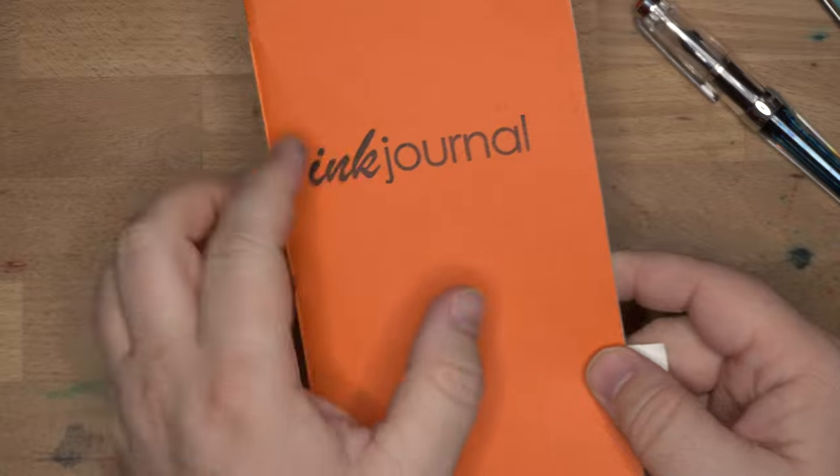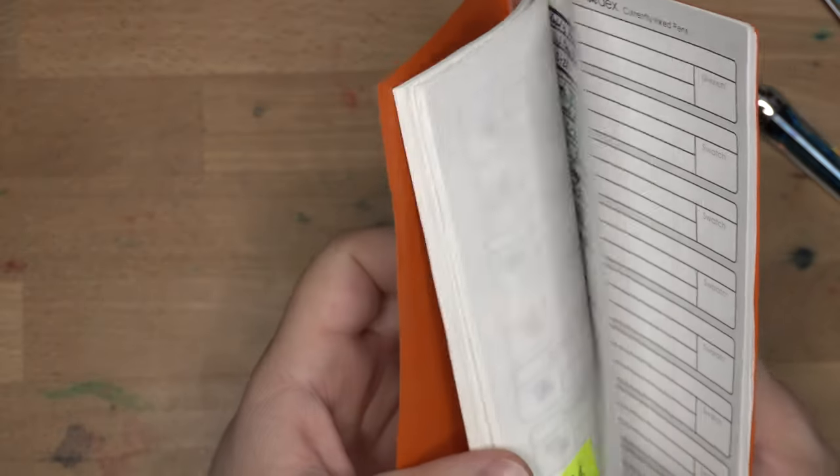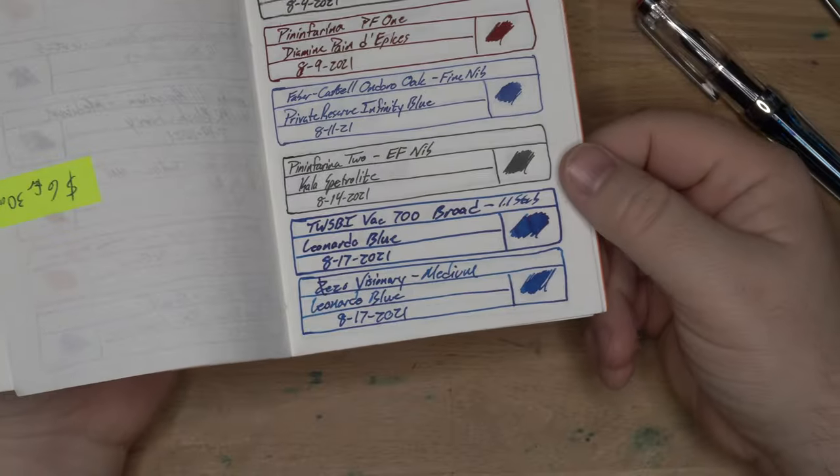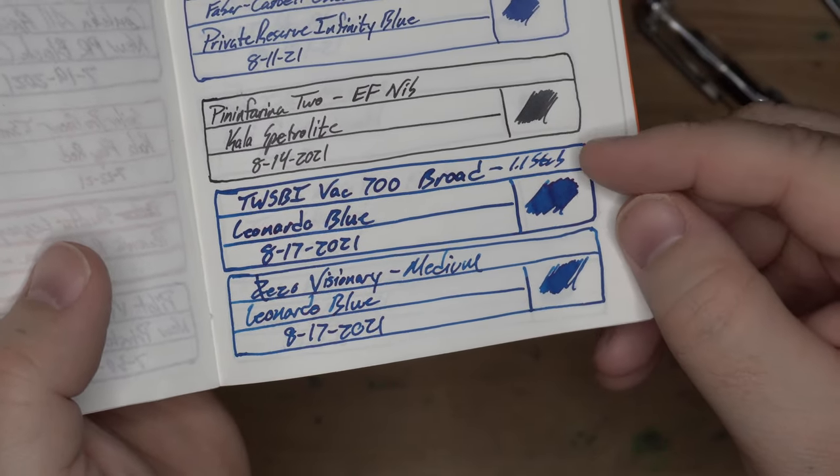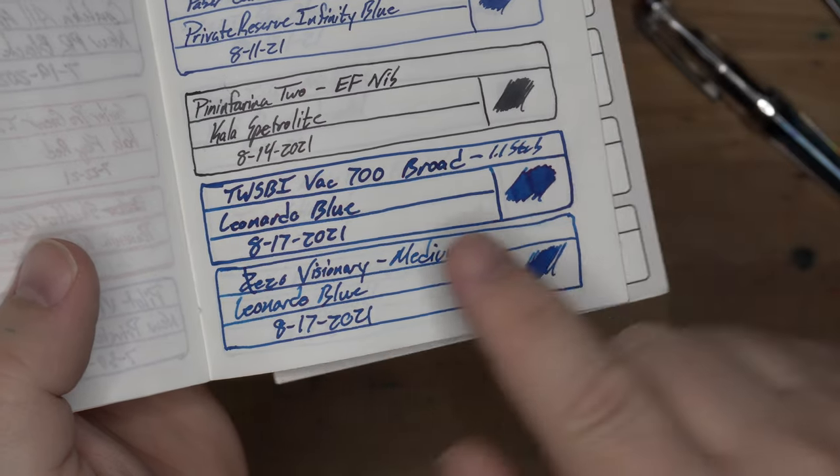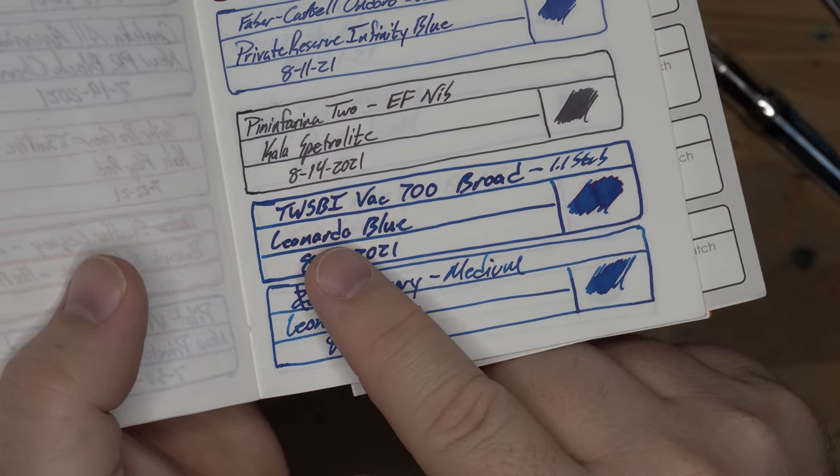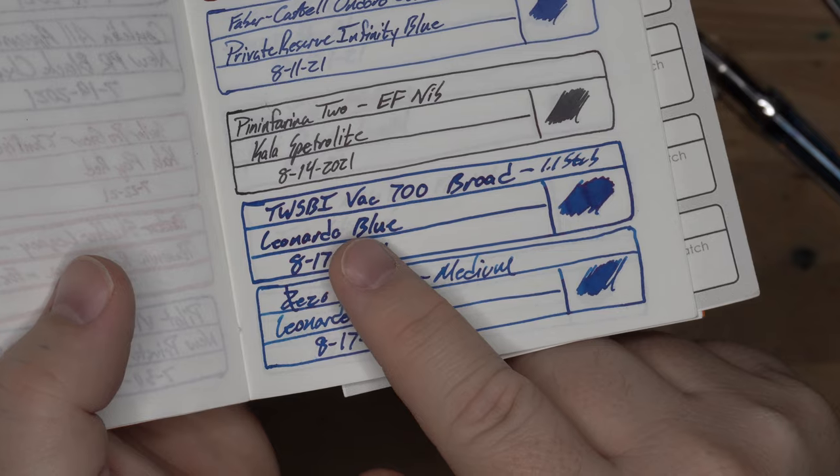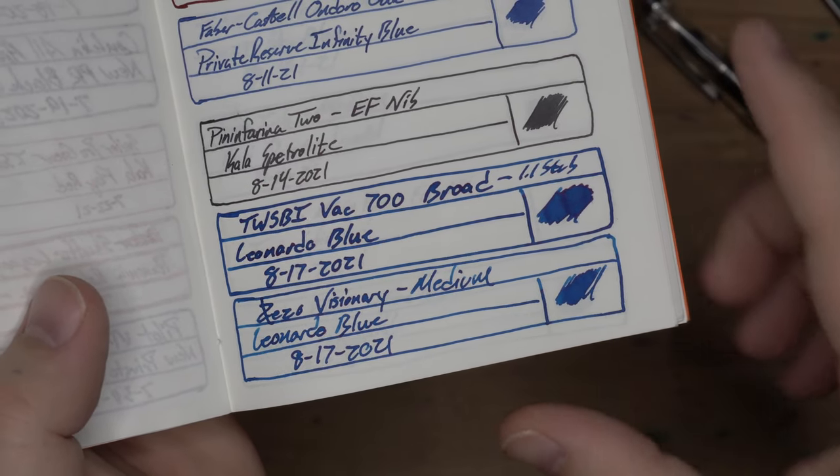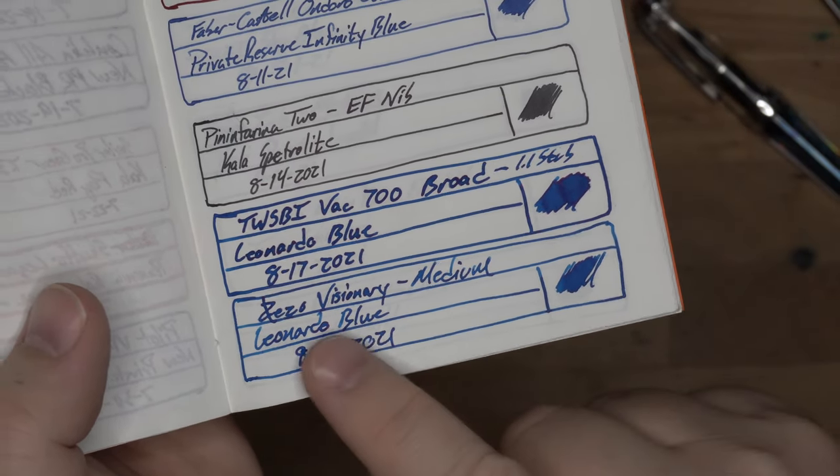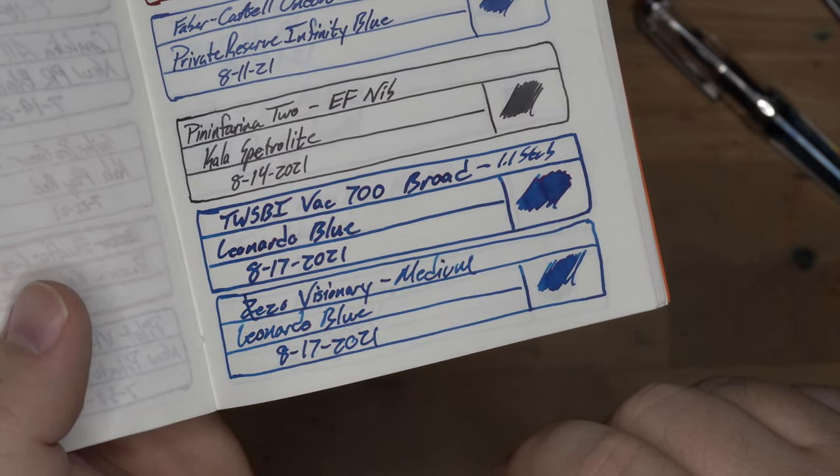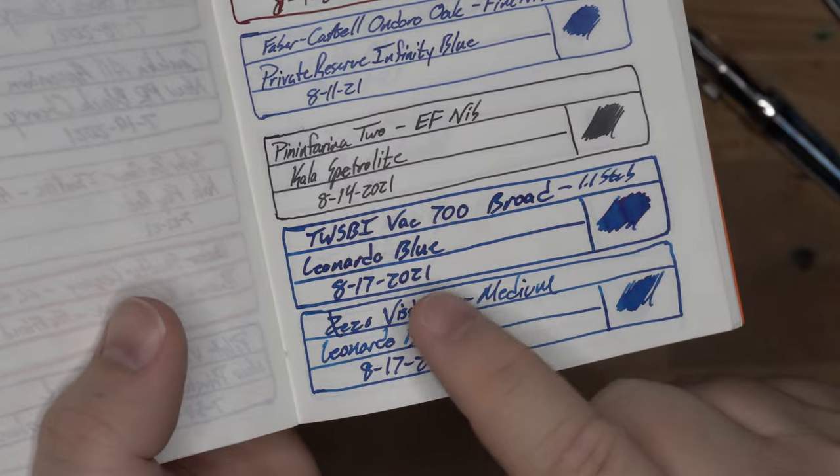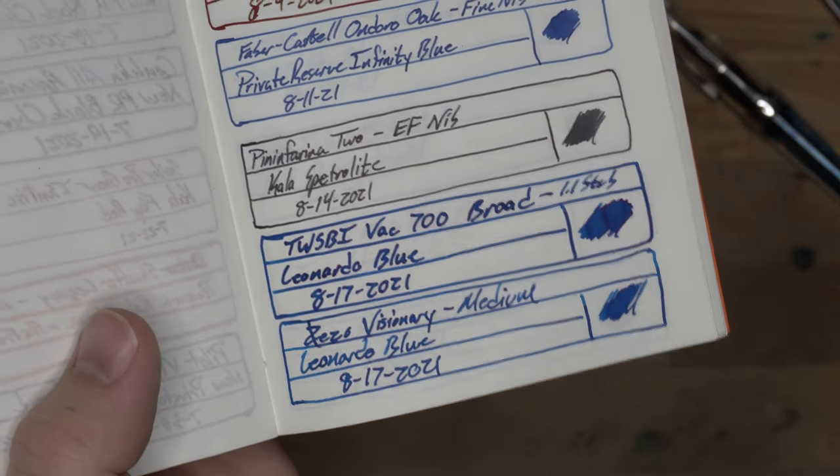Next and last, Tomoe River in an ink journal. Almost out of pages in this thing. VAC 700 Broad, too much. Stub, much better. Leonardo Blue, you get a whole lot of sheen in here. Look at those sheens at the ends and the tops and bottoms of all the letters. If you really want to hit the sheen, hit this with something wet. And then here we have the Visionary, which is a little bit less crazy than the original Broad.